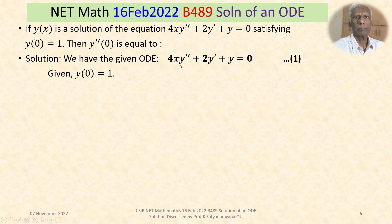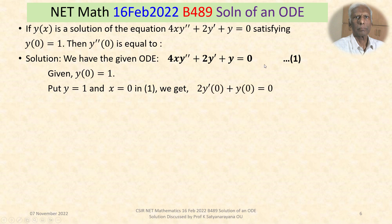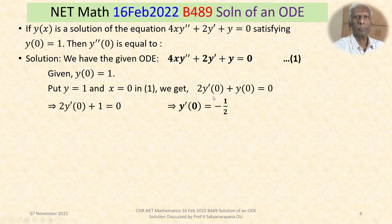We substitute y(0) = 1 and x = 0 into the differential equation. The term 4x·y''(x) vanishes at x = 0, so we get 2y'(0) + y(0) = 0. Since y(0) = 1, this gives 2y'(0) + 1 = 0, so 2y'(0) = -1, therefore y'(0) = -1/2. We have now found the value of the first derivative of y at x = 0.